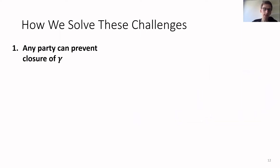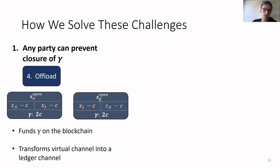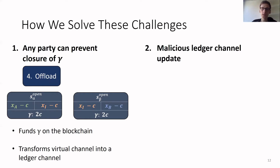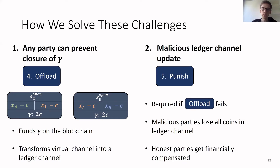How do we solve these challenges? The first challenge — that any party can prevent closure of the virtual channel — we solve by introducing a procedure called offload, which essentially publishes the opening states of the ledger channels to the blockchain. This is the first time the blockchain actually learns about virtual channel gamma, because these states include 2C coins assigned to gamma. This actually funds the virtual channel on the blockchain, transforming a virtual channel into a ledger channel. The second challenge — that two malicious parties can update one of the ledger channels — we address by introducing a punishment procedure. This procedure is executed if the offload procedure fails due to malicious behavior, and it allows punishing the malicious parties so they lose all the coins in their ledger channel, while the honest party gets financially compensated.